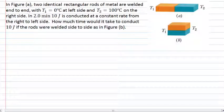In this problem, we want to consider the two figures which are given. In figure A, two identical rectangular rods of metal are welded together end-to-end.